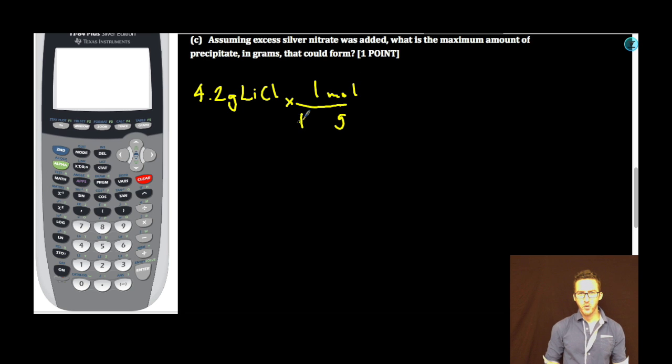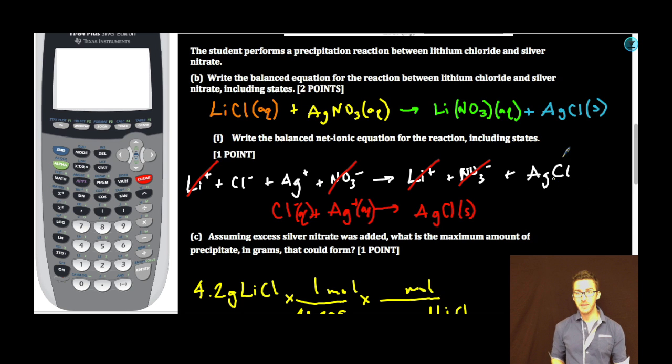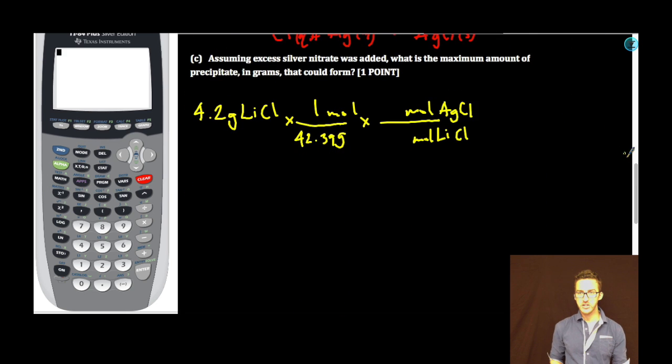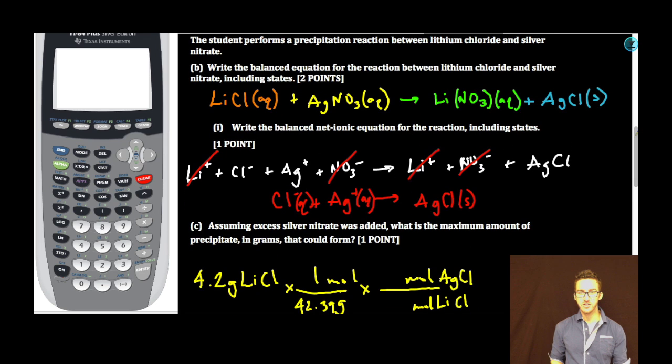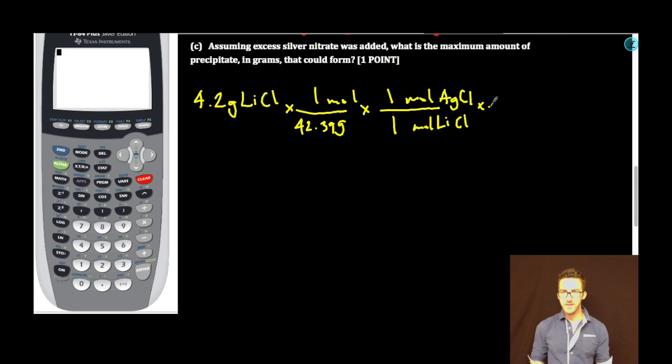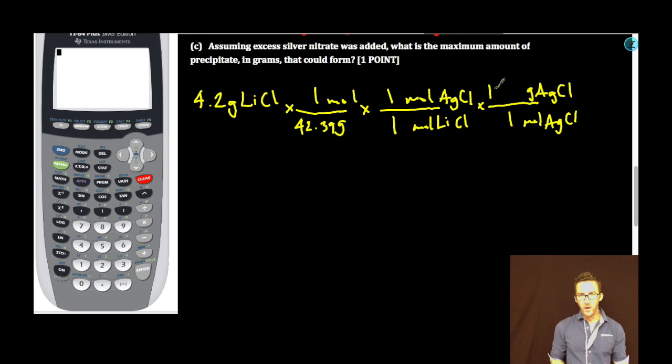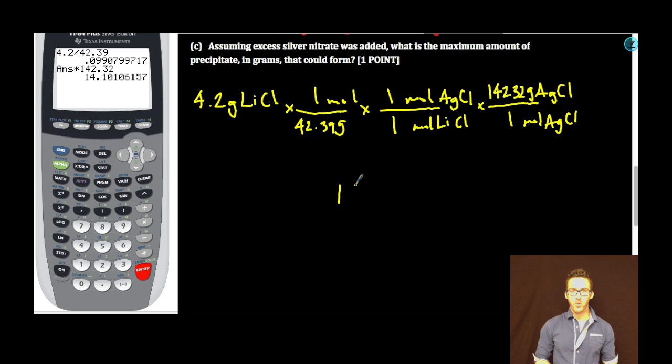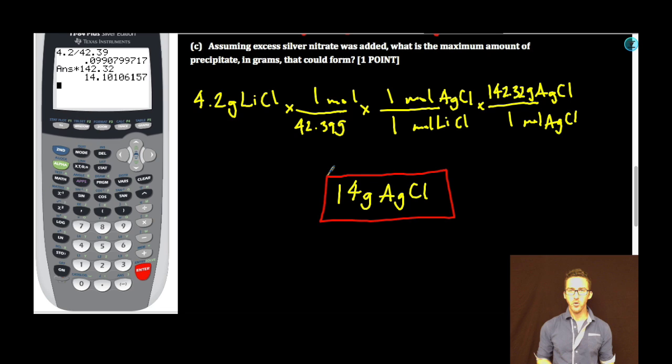First thing I'm going to do, convert to moles. 42.39 is my molar mass of lithium chloride. Now, which of these is my precipitate? The silver chloride. This ratio comes from my balanced chemical equation, which is 1 to 1. And then finally convert back to grams. The molar mass of AgCl, 142.32. Calculator time. 4.2 divided by 42.39. It's about a tenth of a mole. I don't even need a calculator. Times 1 divided by 1 times 142.32. To sig figs, I'm going to make 14 grams of silver chloride. Boom. Done.